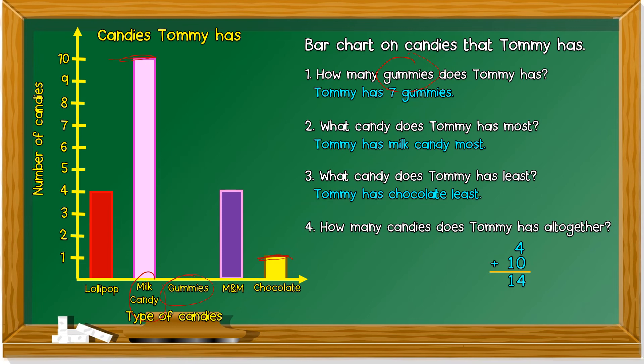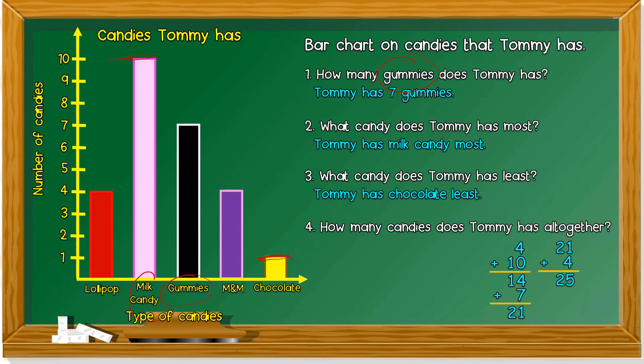Gummies, seven. So it's 14 plus 7, 21. M&M, also four. So 21 plus 4 is 25. Last one, chocolate. Chocolate only has one. 26.